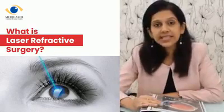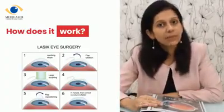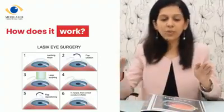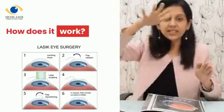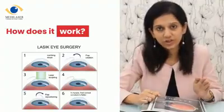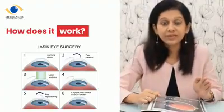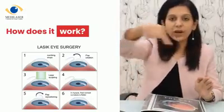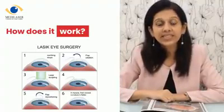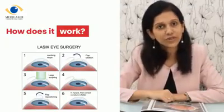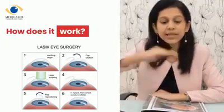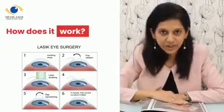In myopia, we flatten the center part of the cornea. If your cornea is shaped like a dome, we remove tissue from the center and flatten it — much like a concave lens — so it focuses rays of light on your retina. For a plus refractive error, we apply laser to the peripheral part to steepen the center slightly so it acts as a convex lens. For an astigmatic error, the steeper meridian is flattened to correct your refractive error.